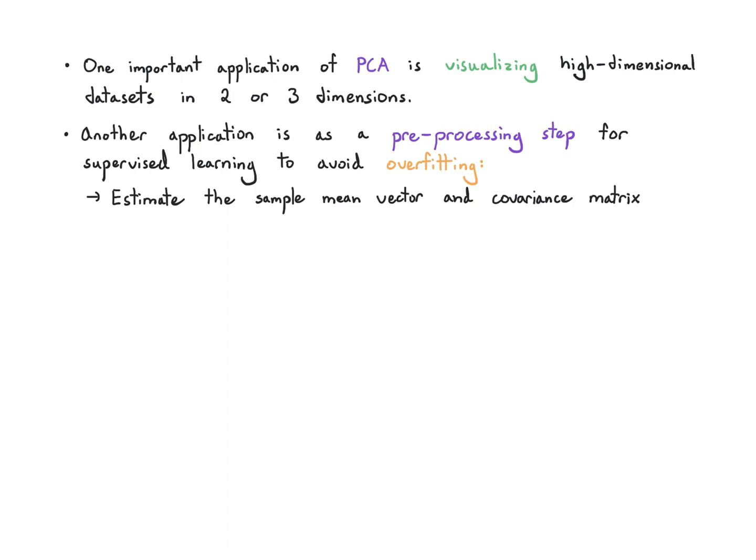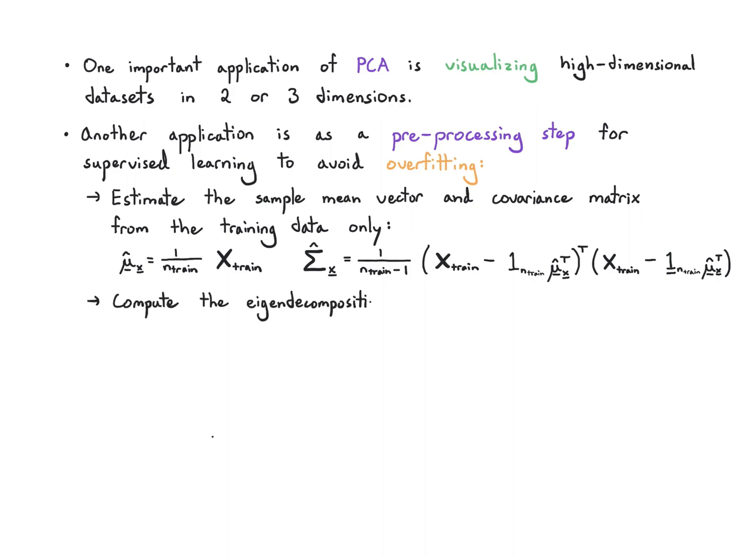The way that's going to work is I'm going to estimate my sample mean vector and covariance matrix using only the training data. I'm not going to use the test data for this. Once I've completed this, I have my estimates and I can form my PCA transform. The first step is I compute the eigendecomposition, so I find V and Λ, and I only keep the first k eigenvectors.